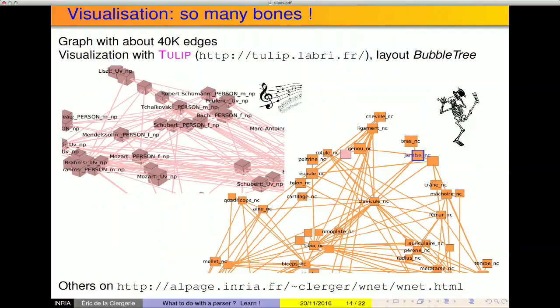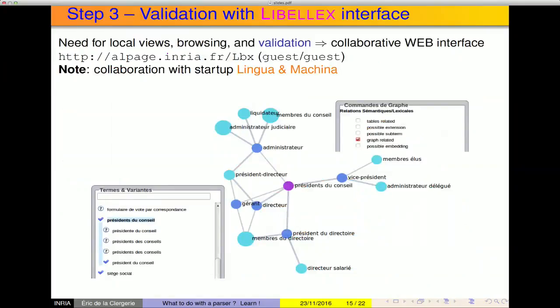Here are some coarse-grained visualization examples made with software called Tulip. It's a graph with 40,000 connections, so it's quite large — only small fragments are shown here. You have one cluster of composers: Schubert, Mozart, Brahms. Here it's parts of the human body: legs, clavicles, skulls, jaws, femurs. Other examples are available at a given address. This is a broad-spectrum, coarse-grained view. Progressively, we developed a web-based collaborative visualization and navigation interface for this kind of graph, which also allows validation. This interface was developed in collaboration with the startup Lingua et Makina.